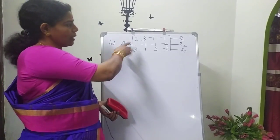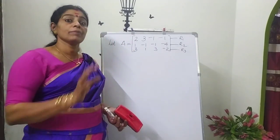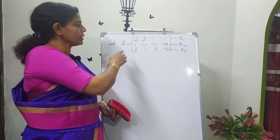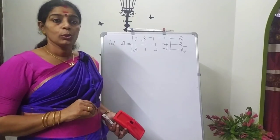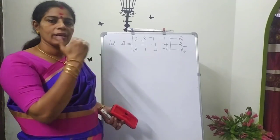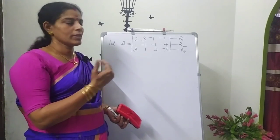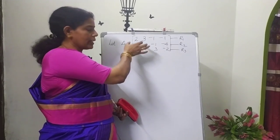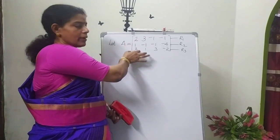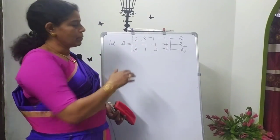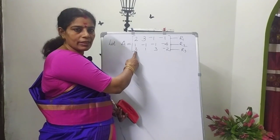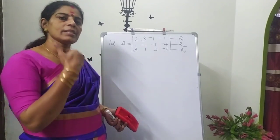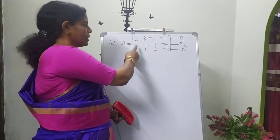We have to find the rank starting from row 1, first pivot. We need to convert certain elements to zero, and we will operate here. The two and two give zero. We have to do this step — so what have we done here? We have to clear out the first row, first element as one.